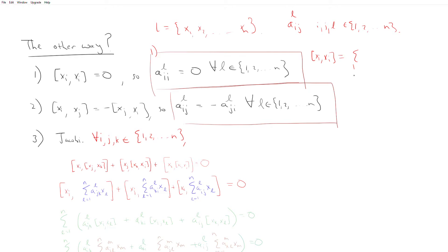l equals 1 to n, a sub i, i, l times x of l. However, this is also equal to zero, and so each of these coefficients are zero. So that's where we get this first relation.